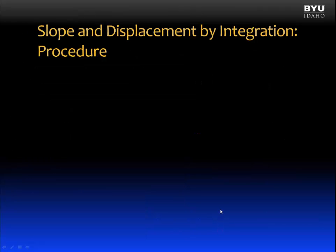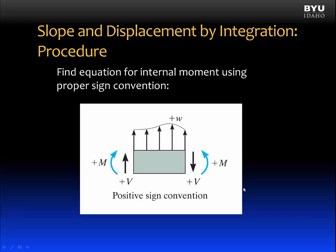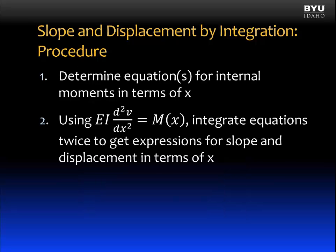Here are the steps in the procedure for finding slope and displacement by integration. First, determine the equation or equations for internal moments in terms of x in the beam. When writing the equations, we need to remember the positive sign convention — see Unit 5.1 to review how to write equations for internal moments. The second step is: using the relationship that flexural rigidity times the second derivative of the elastic curve equals the moment, integrate the moment equations twice to get expressions for slope and then displacement in terms of x.